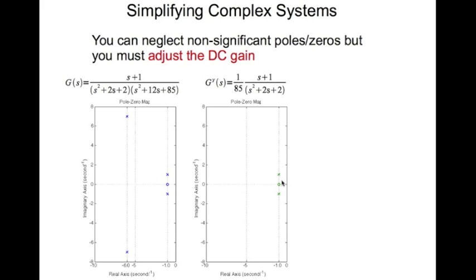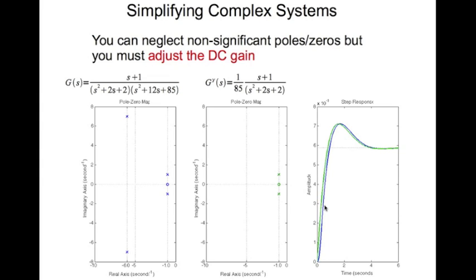This is shown in the pole-zero plot, where those two poles are simply dropped. Looking at the step response comparison, the green curve corresponds to the new reduced system and the blue corresponds to the original system — and you can see they are almost the same, confirming that this simplification is valid.